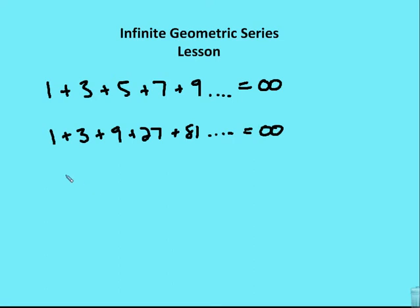So the time where an infinite geometric series can have a finite sum is where the constant ratio, the absolute value of the constant ratio, is going to be less than 1.